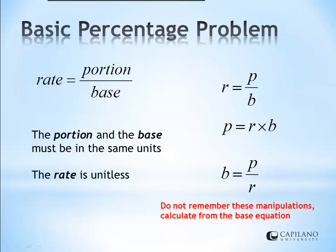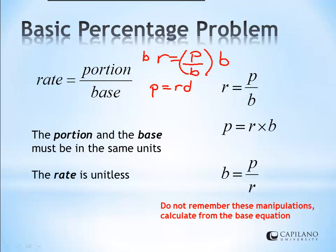We have an equation: the rate equals the portion over the base — R = P/B. When we algebraically manipulate that, we can say P equals R times B, and B equals P over R. To isolate P, multiply both sides by B, so the portion equals the rate times the base.